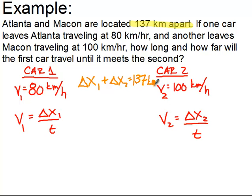So delta X1 plus delta X2 is 137 kilometers. So now we can solve that relationship for one of our two variables. We can solve it for delta X1 or we can solve it for delta X2. Let's go ahead and do that. We're going to say that delta X1 equals 137 kilometers minus delta X2. So now we have this relationship and we've solved for one of our variables.